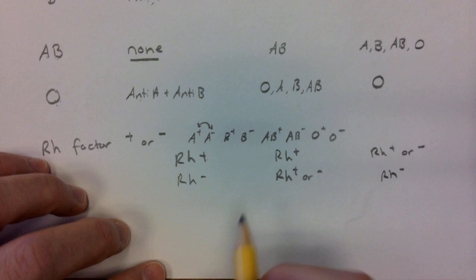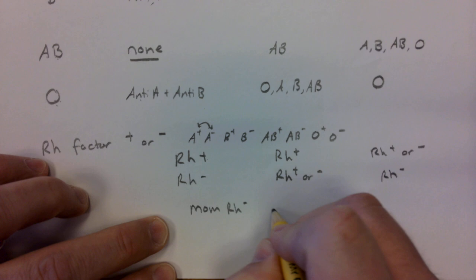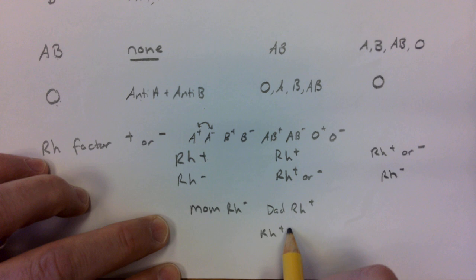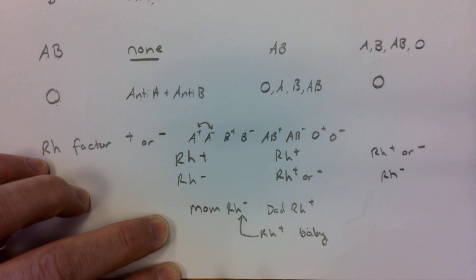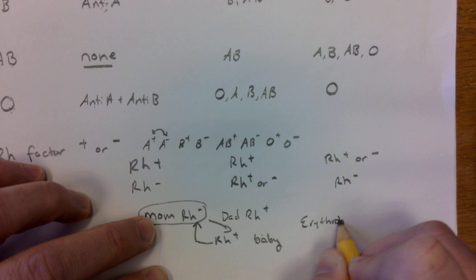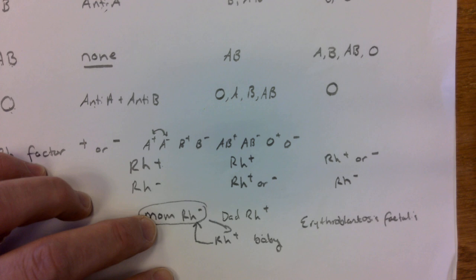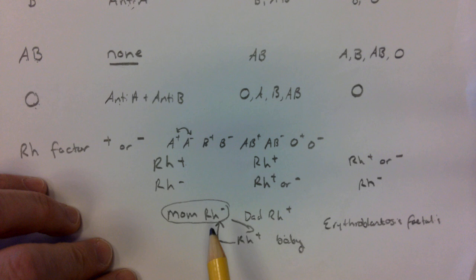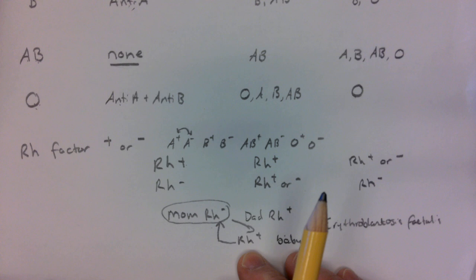One last situation: if mom is Rh negative and dad is Rh positive, and the baby develops Rh positive blood, then through mom there will be an immune response against the baby's own blood. It's called erythroblastosis fetalis — a situation where there's an immune response against the baby's own red blood cells. Unfortunately, it can be a fatal situation, which makes subsequent pregnancies harder and harder for mom. This all comes from the genetics.